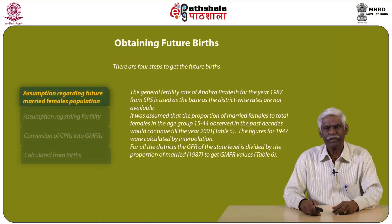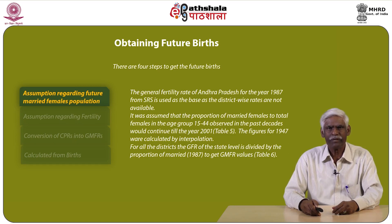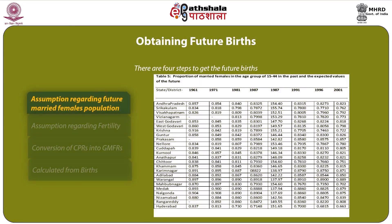Obtaining future births is another required step, with 4 sub-steps. Step 1 concerns assumptions regarding future married female population. The general fertility rate of Andhra Pradesh for 1987 from the Sample Registration System is used as the base, since district-wise rates are not available. It was assumed that the proportion of married females to total females in the age group 15 to 44 years observed in past decades would continue till 2001, as presented in Table 5. Figures for 1997 were calculated by interpolation. For all districts, the state-level GFR is divided by the proportion married in 1987 to get the general marital fertility rate (GMFR), presented in Table 6.